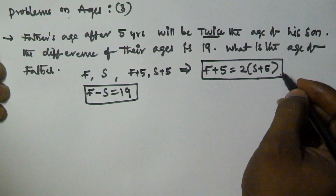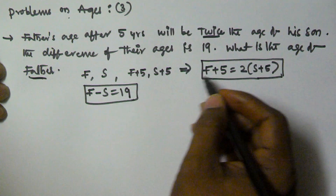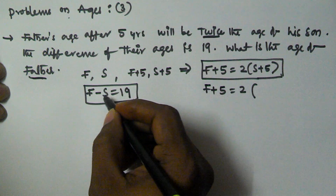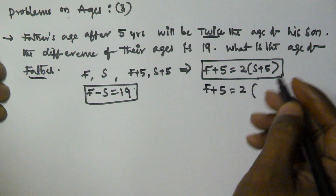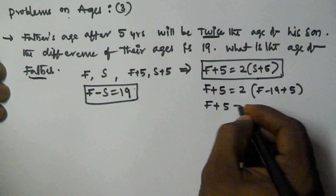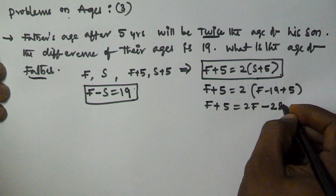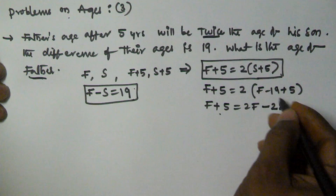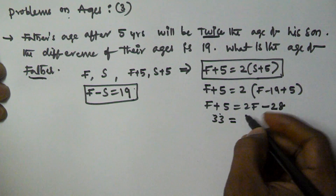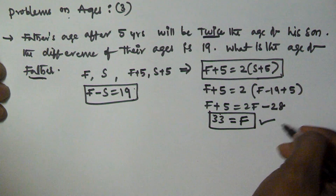We have to find the age of the father. We substitute the son's value: from f minus s = 19, s equals f minus 19. Substituting: f plus 5 equals 2 into f minus 19 plus 5. That gives f plus 5 equals 2f minus 28, so 28 plus 5 is 33 equals f. The father's age right now is 33 years.